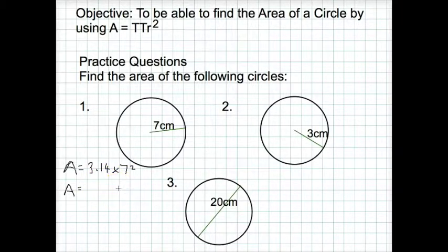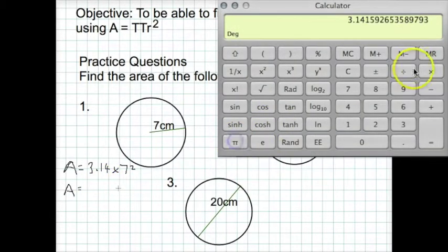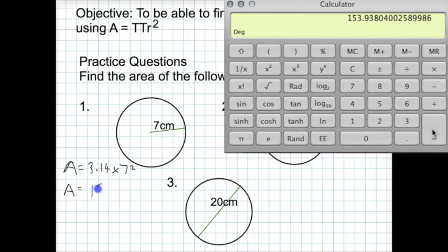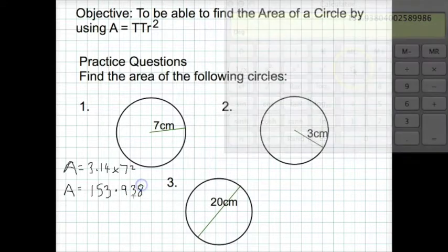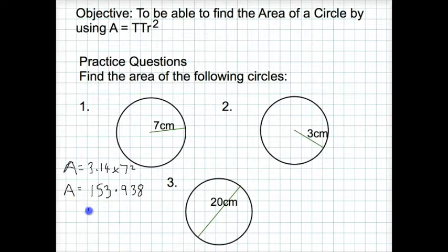So if we do that, type in π times 7 squared, and we get an answer of 153.938. To one decimal place, that's 153.9. Because it's an area, the units are centimeters squared.